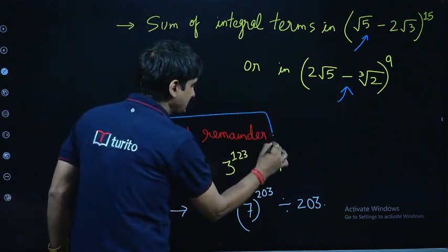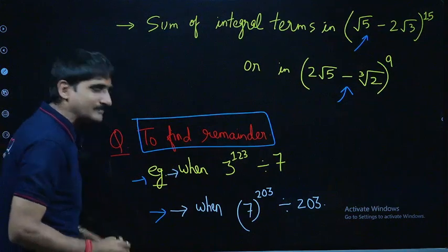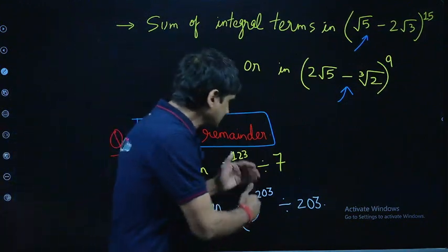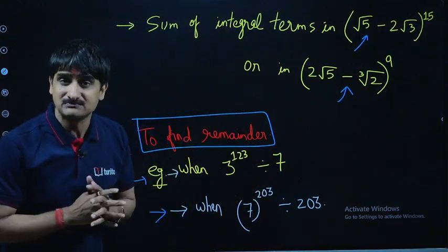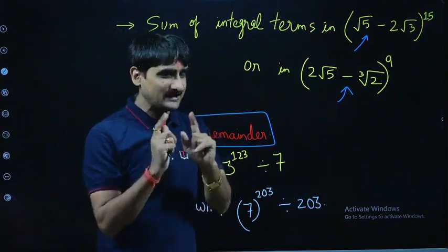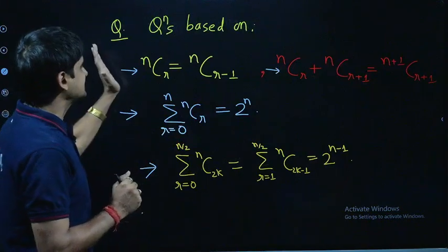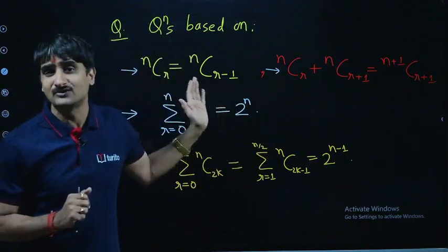And then of course to find the remainder. I just mentioned two examples here so you should be able to solve such types of questions using binomial expansion. So that's again an important aspect. Next is questions based on these properties.